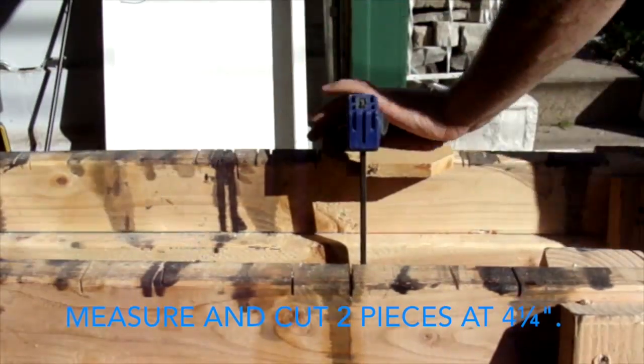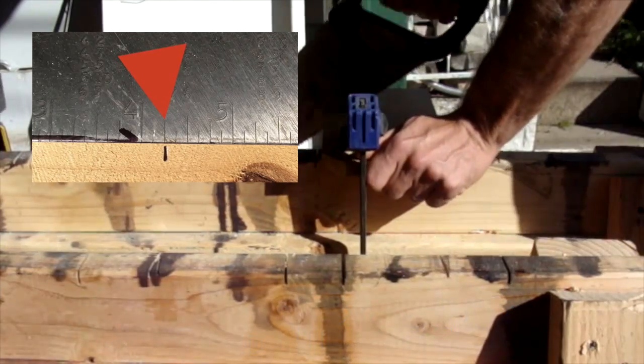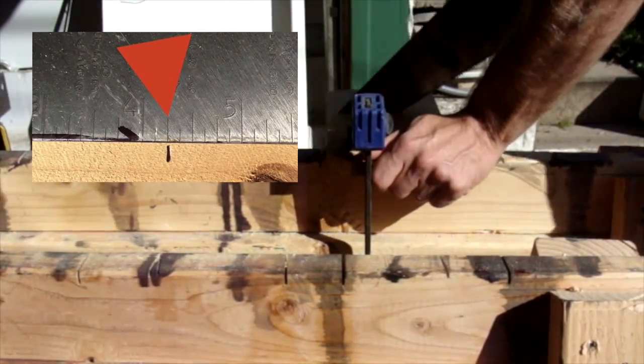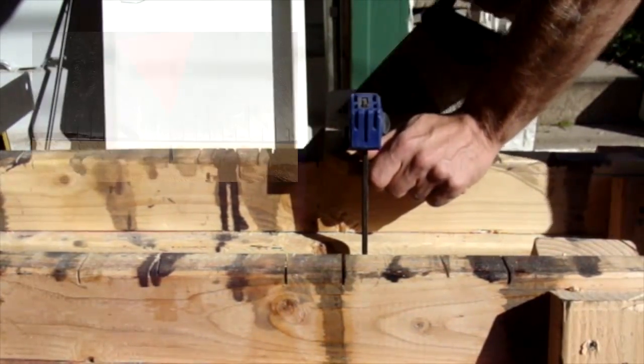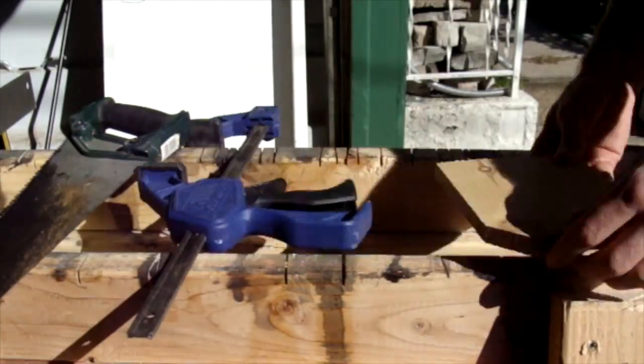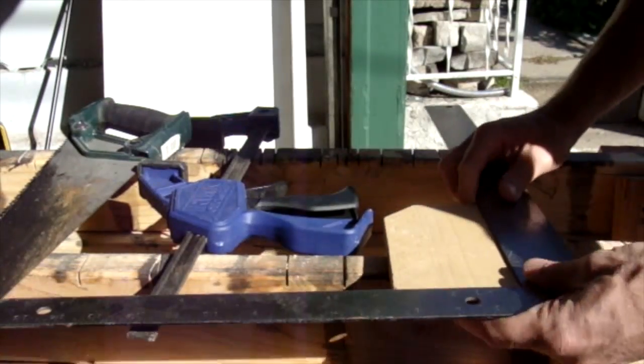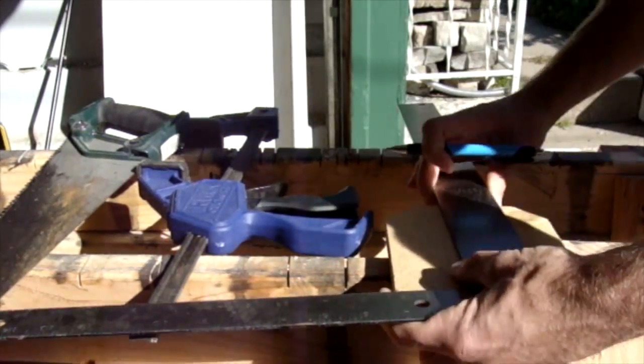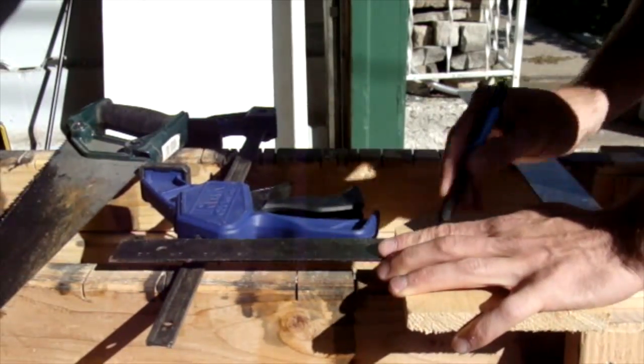The last two pieces that we need will be 4¼ inches, and these are going to be the two sides of the birdhouse. Since it's getting a little short, you may want to clamp the pieces down so you can hold it more securely when you cut.